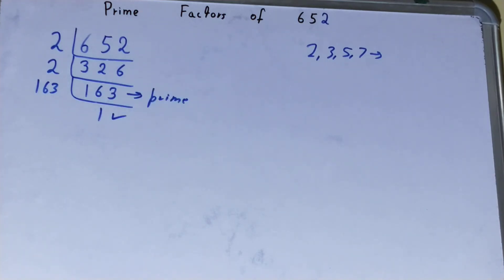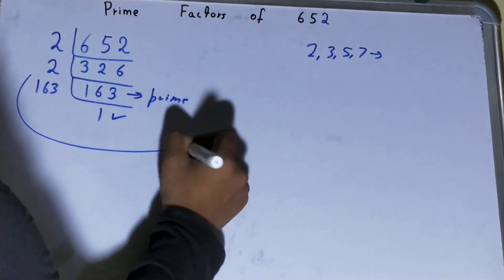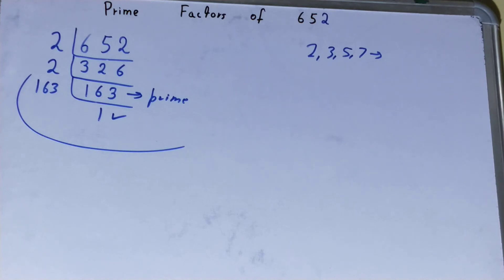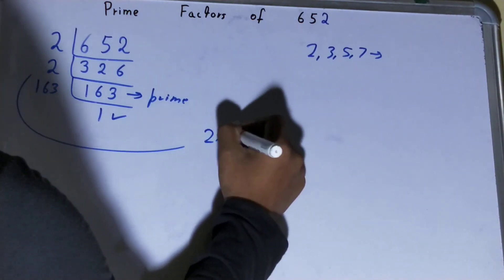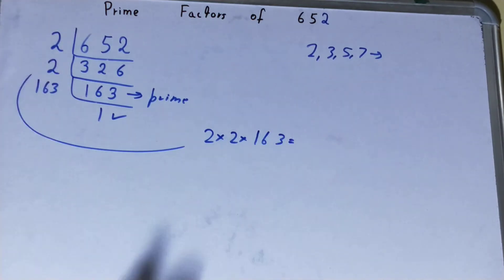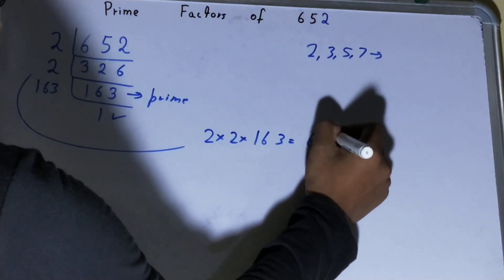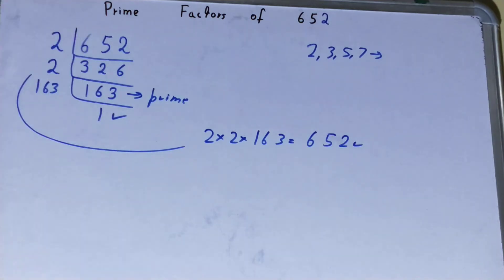And once you are left with 1, the work is done. And whatever you have on the left-hand side will be the prime factors of the number 652. That is 2 × 2 × 163. Now if you want to check whether it is right or not, you can multiply it. And if on multiplying you will get the number back again, that means your calculation is correct. If not, you need to recheck.